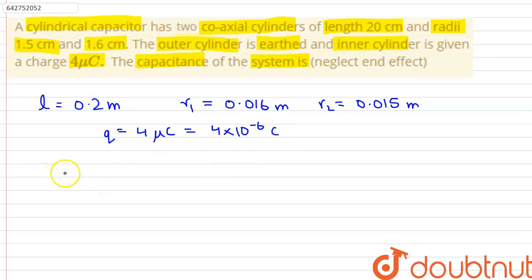given by the formula C = 2πε₀l / (2.303 log₁₀(b/a)), where b is the radius of cylinder r1 and a is the radius of cylinder r2. Substituting